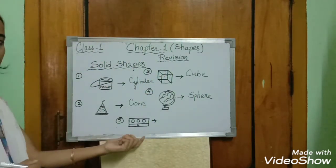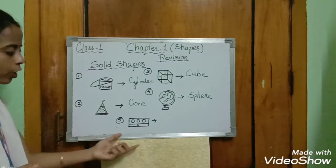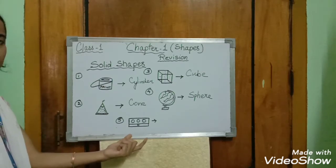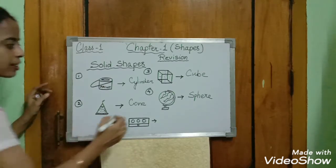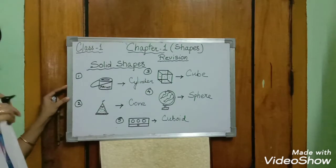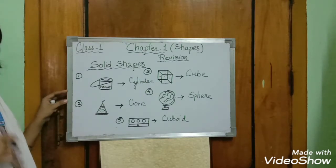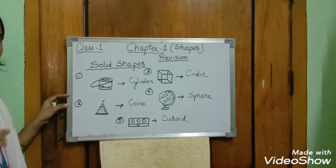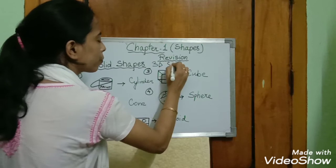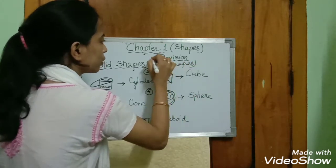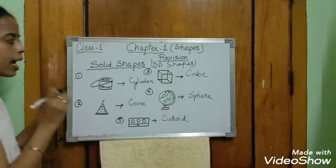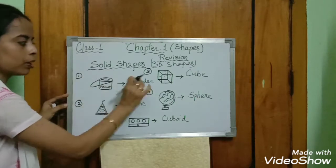The next object I have taken is a geometry box, or we call it a pencil box. Look at this shape — it is like which solid shape? It is a cuboid. So solid shapes are made of straight lines or curved lines, and these solid shapes are also called 3D shapes, or three-dimensional shapes.